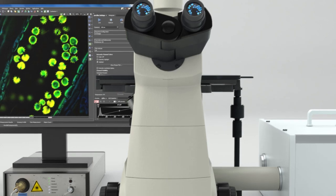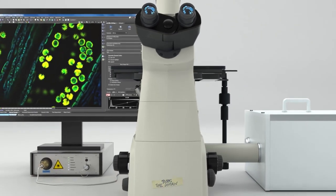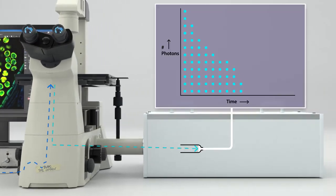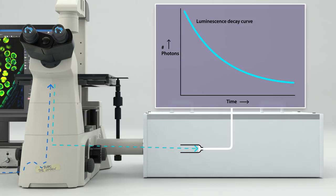Established examples of time domain equipment are point scanning TCSPC systems. These point scanners count the emission photons in time, allowing you to reconstruct a luminescence decay curve.